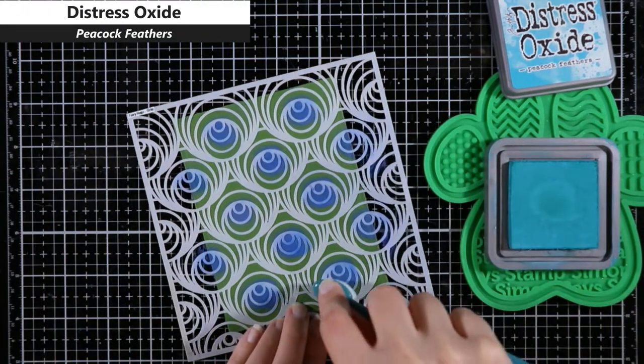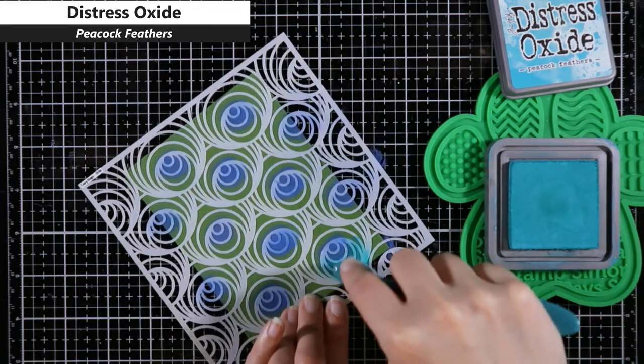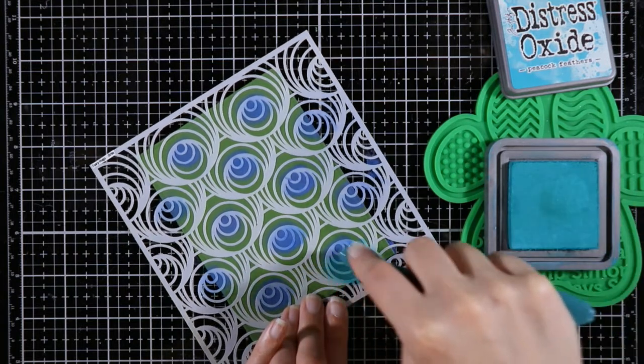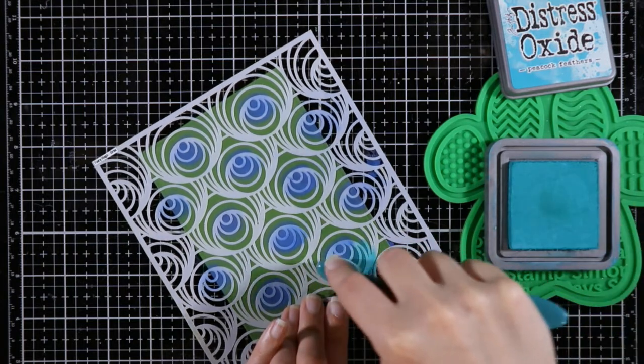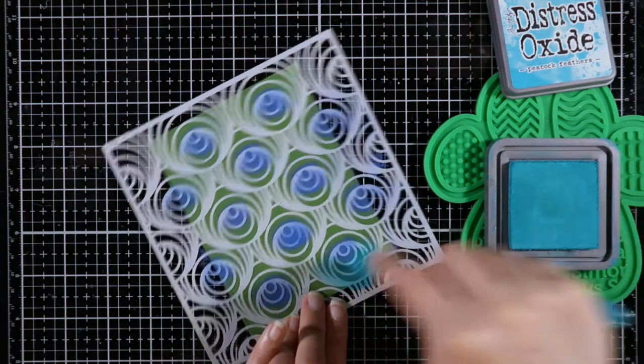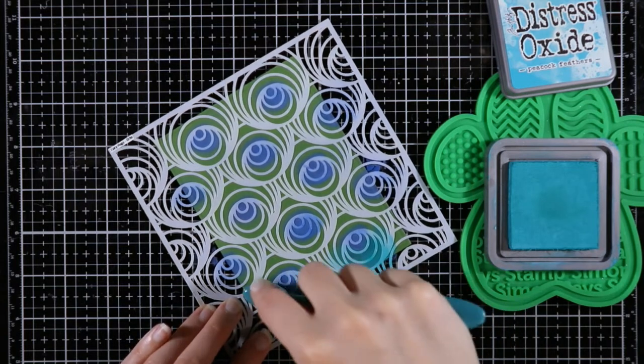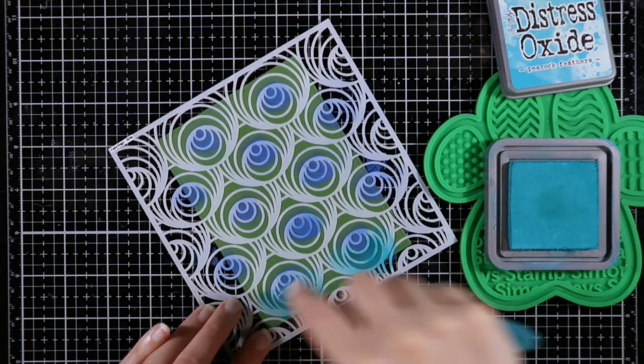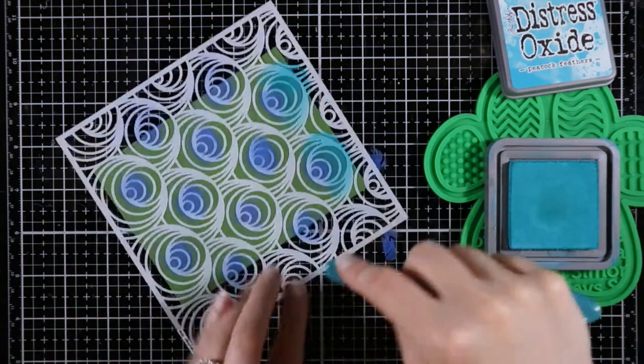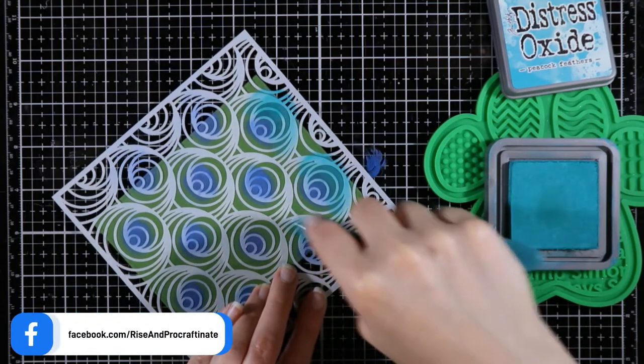I decided to go over each area with Prize Ribbon. Now I'm coming in and doing the little area that's underneath the blue with Peacock Feathers. Again, I don't care that this is going to go into the Prize Ribbon area and it's going to go into the top area, the part above where the Prize Ribbon is.